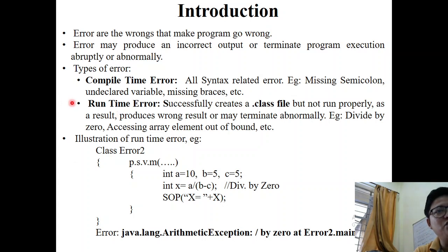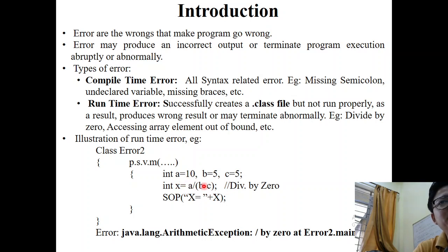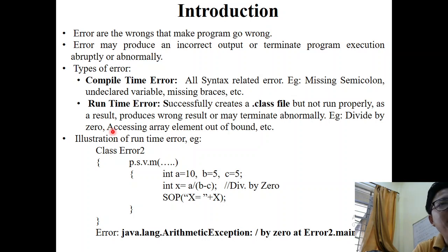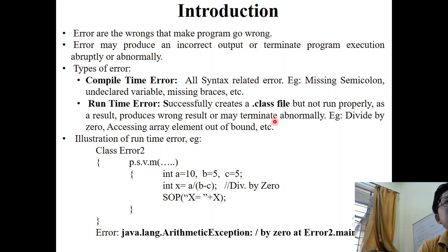The divide-by-zero example shows that when b is 5 and c is 5, the arithmetic expression leads to a divide-by-zero situation. A runtime error is encountered at that line, so the rest of the statements will not execute and the program terminates abnormally. Other examples include accessing an array element out of bounds — trying to retrieve an element by specifying an index that is far beyond the array's limit. These are the basic error types, and most importantly, runtime errors.